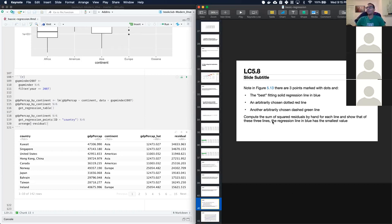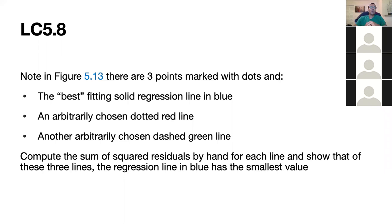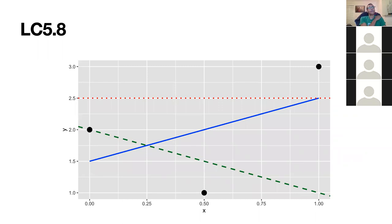The final learning check asks us to compute the sum of squared residuals by hand for three lines shown in a figure — the best-fitting blue line, an arbitrary red dotted line, and an arbitrary green dashed line — and show that the blue regression line has the smallest sum of squared residuals. The intuition is fairly clear that the blue line's residuals will be smallest, but we can walk through it in detail if useful.